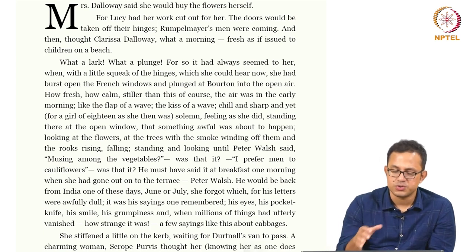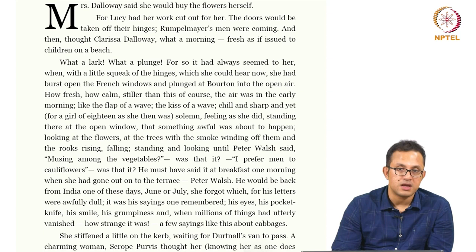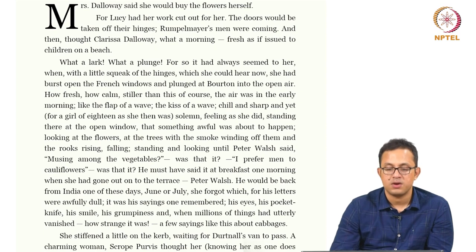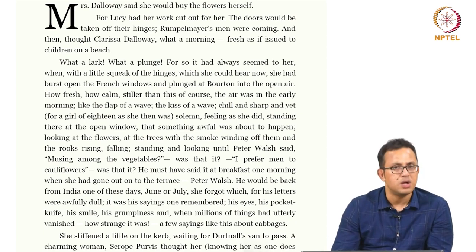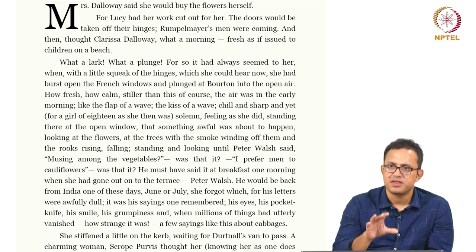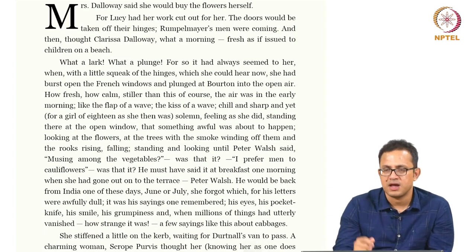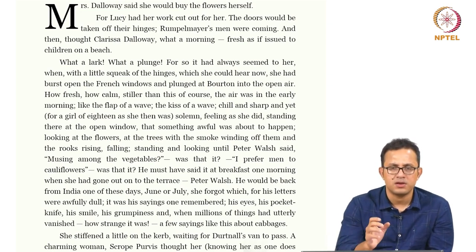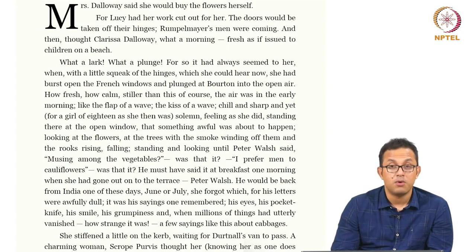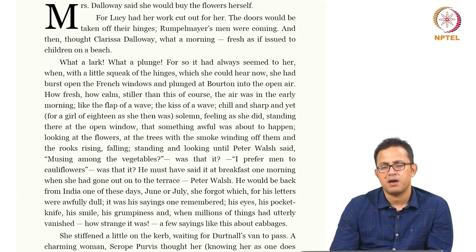We are already introduced to three characters here. Lucy, who is presumably the errand girl for Mrs. Dalloway. We are introduced to Clarissa Dalloway herself, this genteel upper-middle-class woman trying to throw a party, hence the necessity for flowers. And more importantly we have Peter Walsh, who has this very almost spectral presence in the novel — there as well as not there, present physically but never really intervening. He is a very symbolic spectral presence, someone who has been in some capacity in imperial India and has come back, and we are told later that he married an Anglo-Indian woman, which Clarissa does not quite approve of.